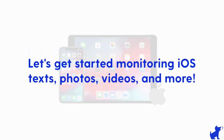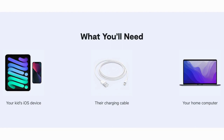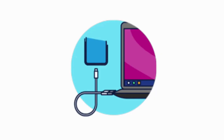In the meantime, let's get started setting up text message, photo, and video monitoring for your child's iOS devices. For the first time setup, you will need your child's iOS device, a Windows or Mac computer, and a charging cable for your child's iOS device. You'll be using this cable to plug the device into the computer for the first time setup.